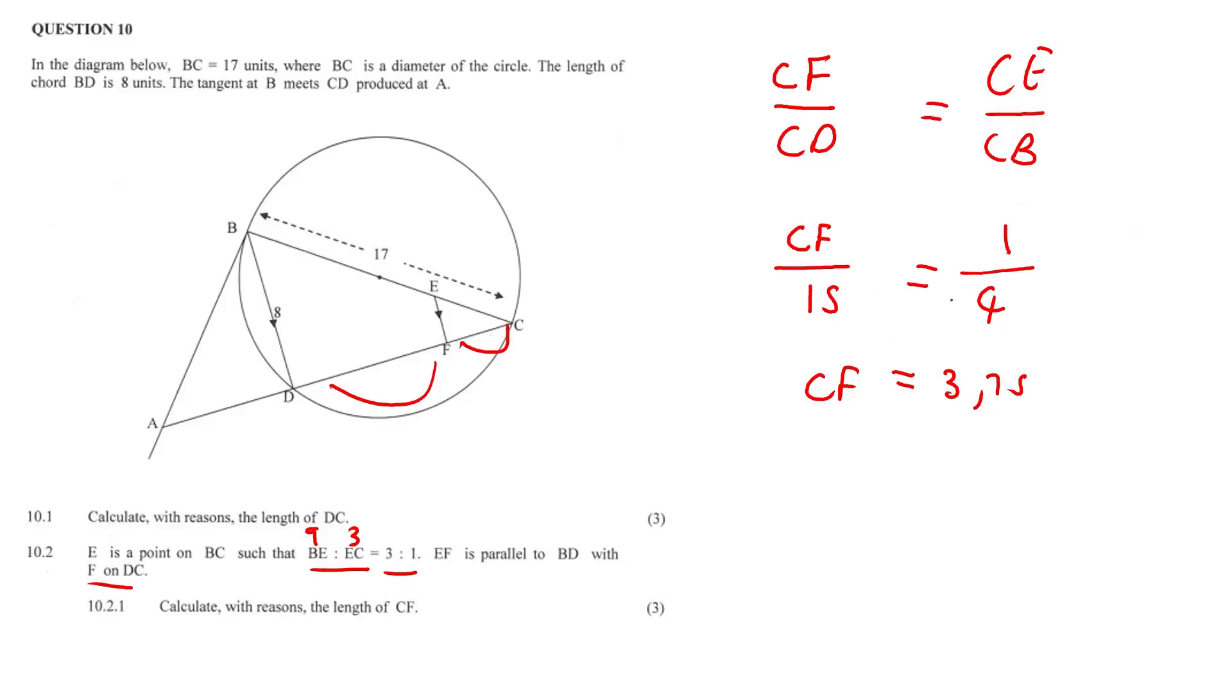Now just to explain this portion here, this 1 is to 4. BE is to EC, 3 is to 1, right? So BE is going to be 3 and BC is going to be 4. Here's why: because the EC represents 1. Do you see that? So that's going to be 3 plus 1. 3 plus 1 is 4. So BC, the total of BC is going to be 4 and that CE portion is going to be 1. That's where it's coming from, just to clarify. And CF is equal to 3.75 units if no other unit of measurement has been stipulated.